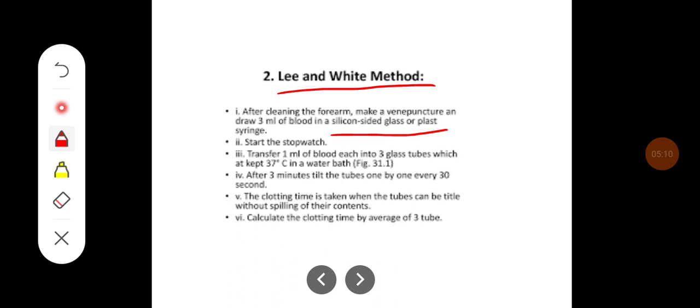Then start the stopwatch and transfer 1 ml of blood into 3 glass tubes which are kept at 37 degrees Celsius in a water bath.